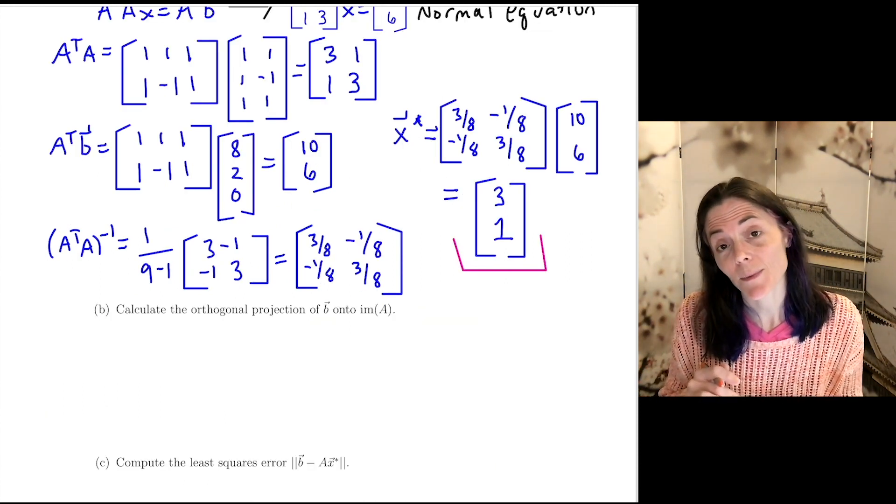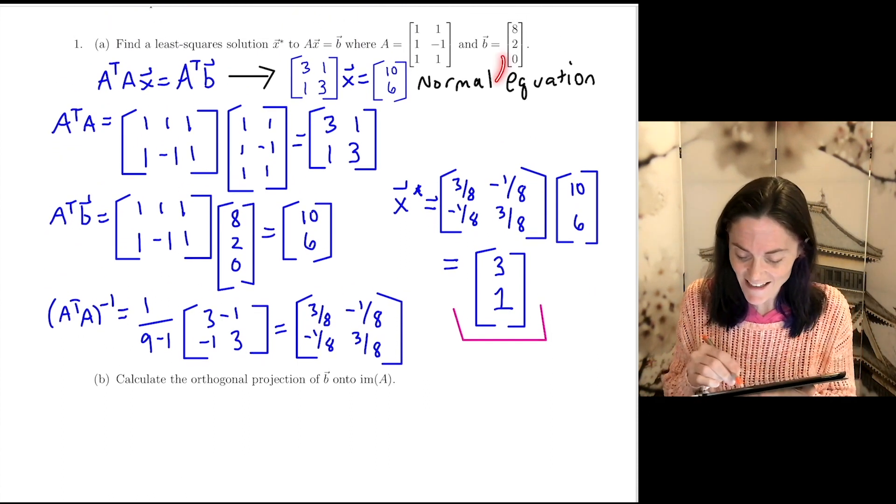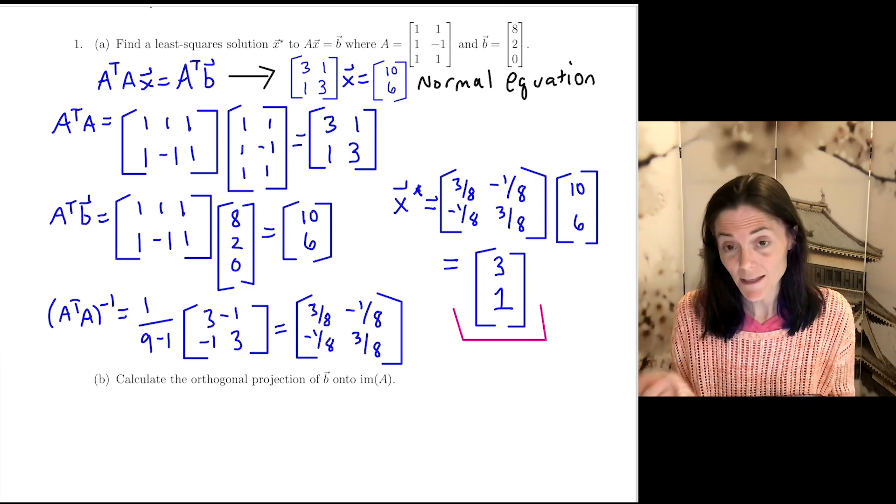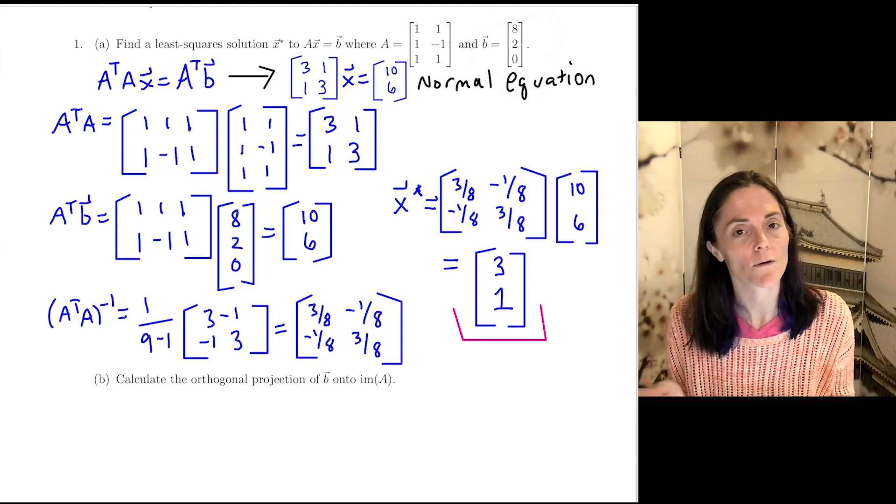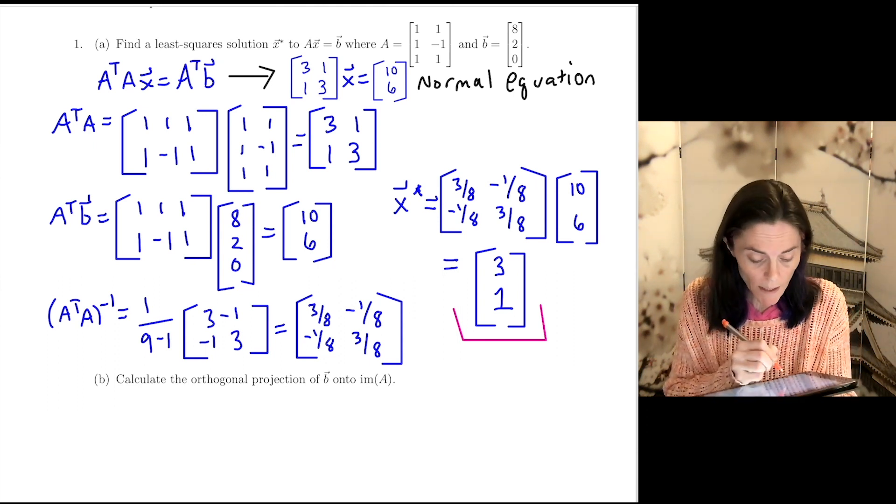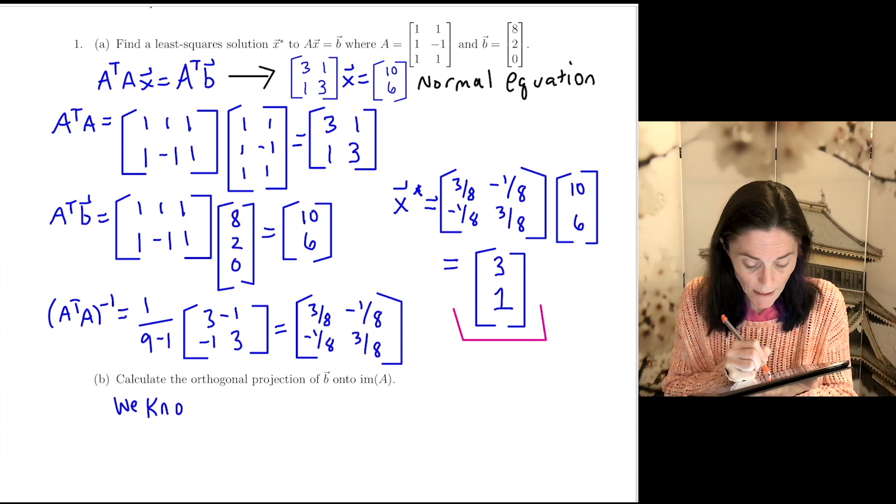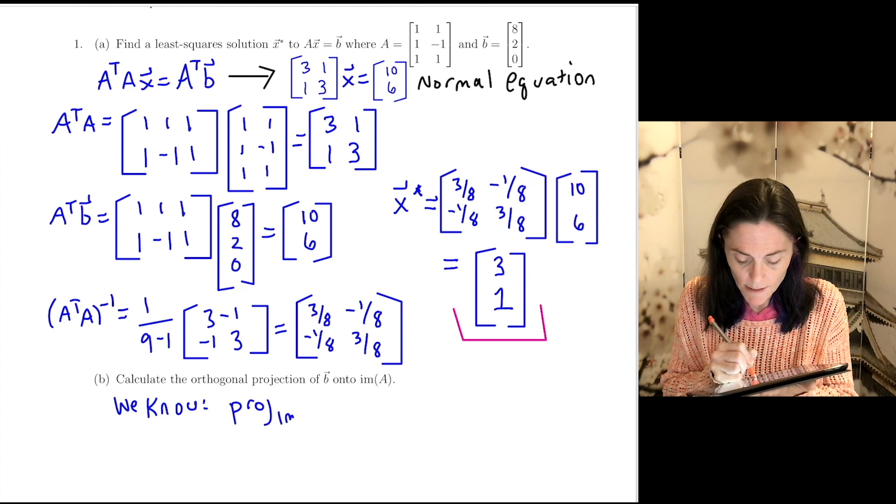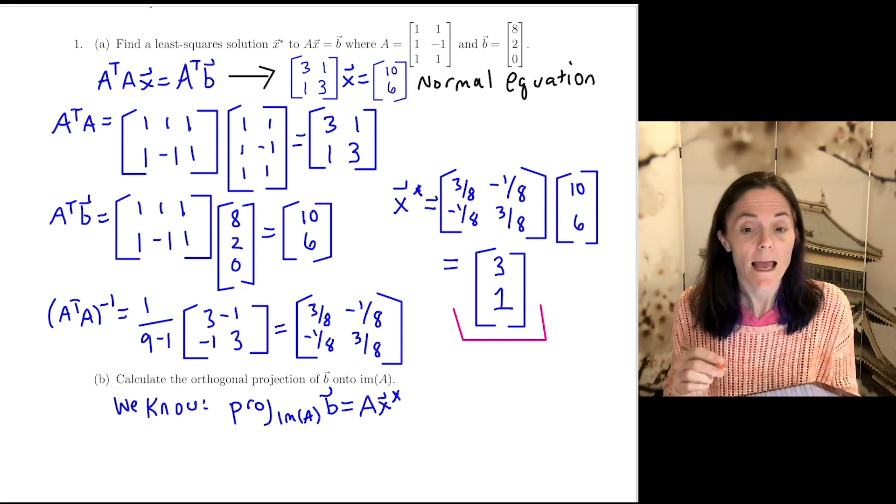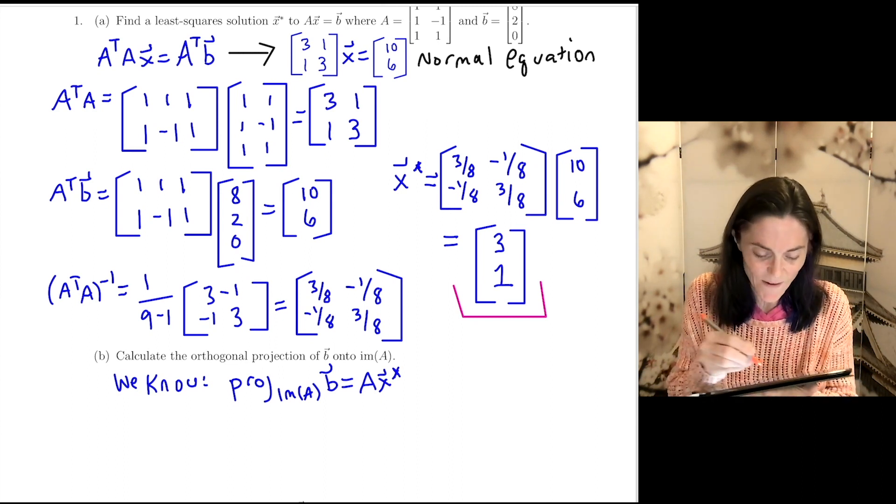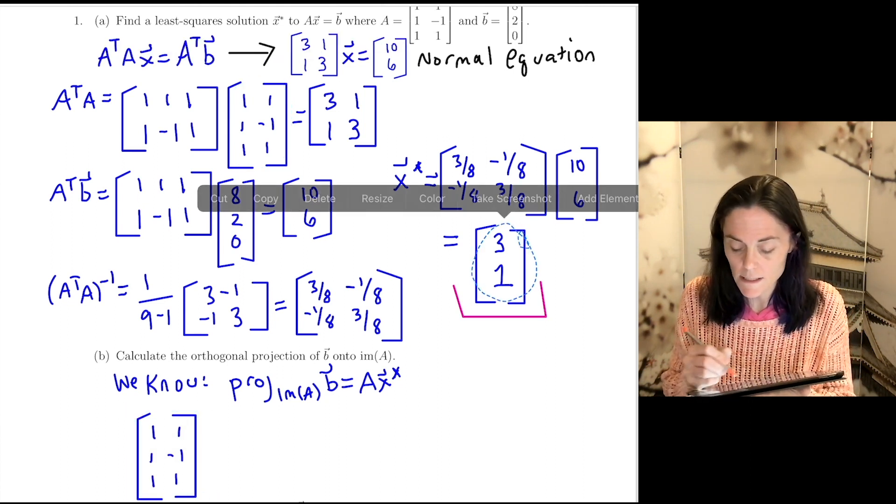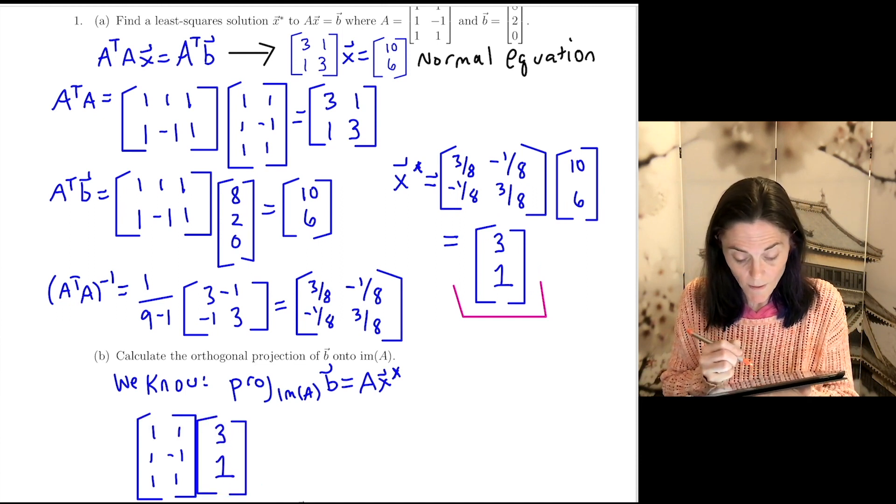Part B says calculate the orthogonal projection of the vector B onto the image of A. Now, it looks like I'm going to have to do things unrelated to this question. It looks like maybe I have to do Gram-Schmidt on the columns of A, and then we could project using that orthonormal basis. But if we use the concepts here, we can calculate this quickly. Because we know, we know the projection onto the image of A of vector B is AX star. This is how we get our least square solution.